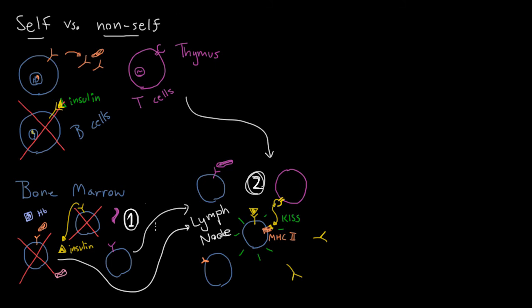Even though your body has these mechanisms to keep your immune system from reacting to yourself, it still happens sometimes. The process still goes wrong sometimes and the result is autoimmune disease — called autoimmune because your immune system basically starts attacking your own body, and some pretty terrible diseases can result.